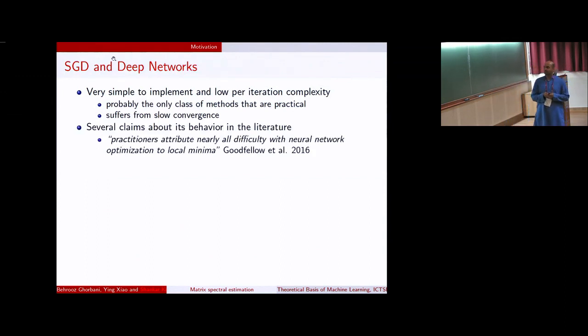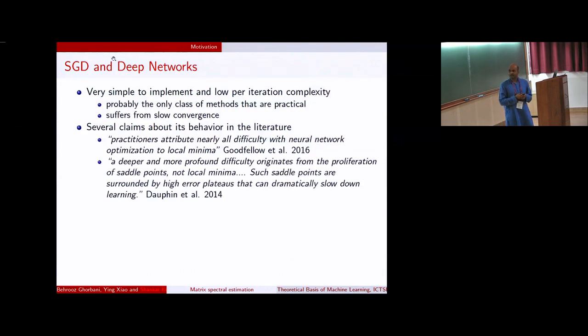One of the pioneers in machine learning, Ian Goodfellow, in his book, has written that practitioners attribute nearly all the difficulty in deep network optimization to local minima. Prior to that, there was a theory floating around which said that a deeper and more profound difficulty originates from the proliferation of saddle points, not local minima. Such saddle points are surrounded by high error plateaus that can dramatically slow down learning.